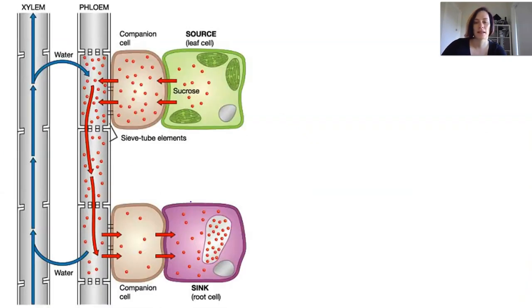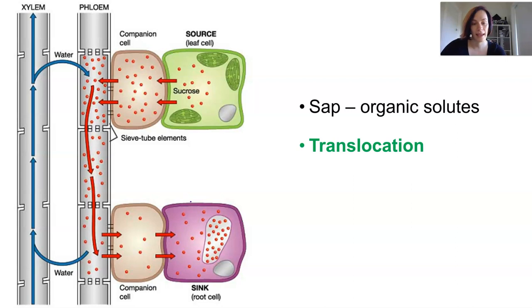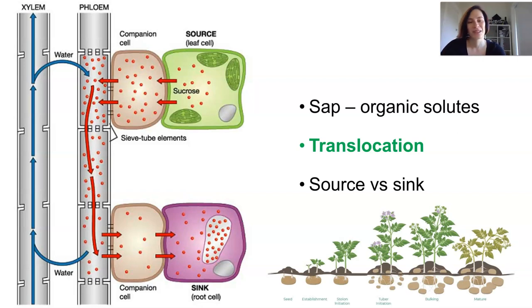Once the water and minerals have reached the leaves, the mesophyll cells can use them as reactants in photosynthesis. Now that organic solutes are produced, these sugars are dissolved and transported around the plant through the phloem, generally known as sap at this point. This process is called translocation. Leaves are known as a source because that is the source of sugars. Plants also have sinks where they store these sugars, like in flowers, roots, and stems. About 90% of the sap is sucrose dissolved in water, and their transport through the phloem is an active process through the cytoplasm of the phloem cell tubes.